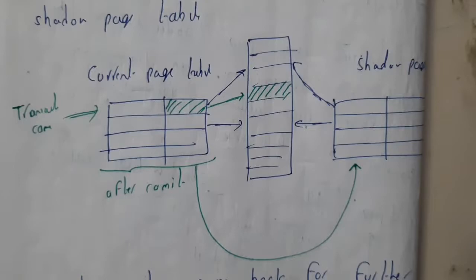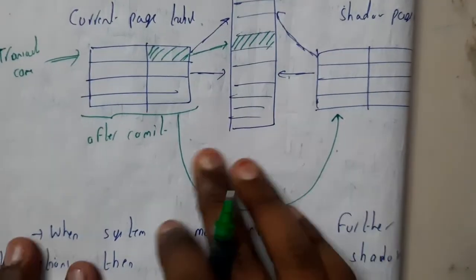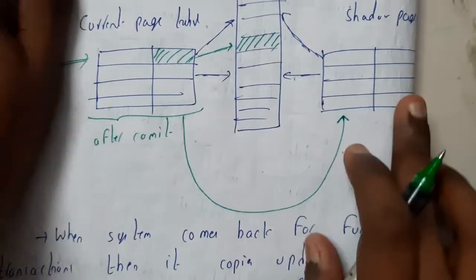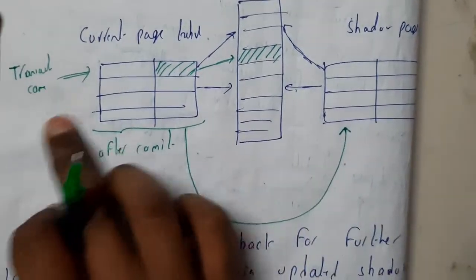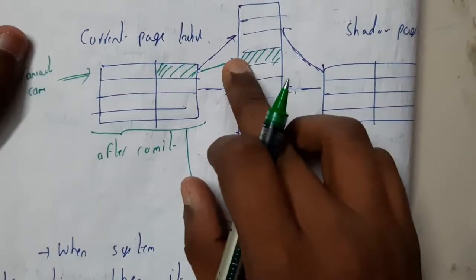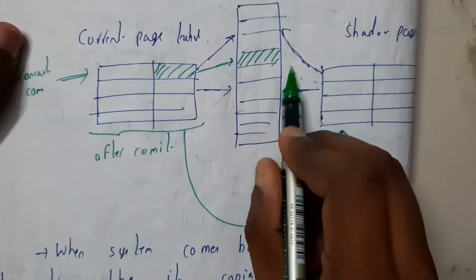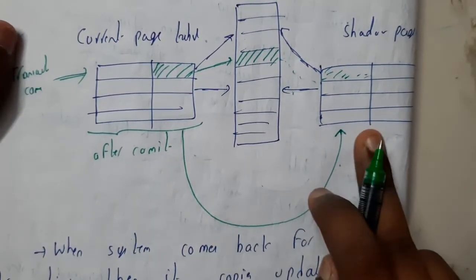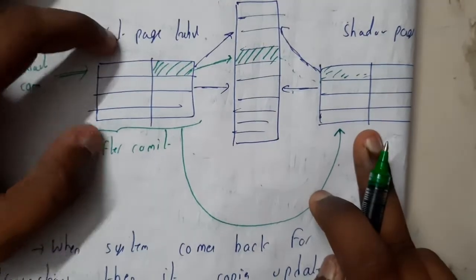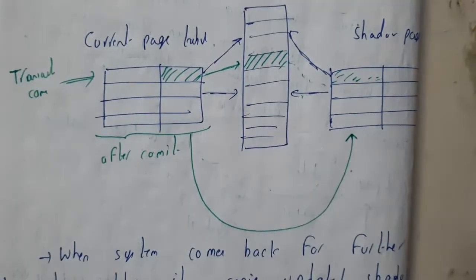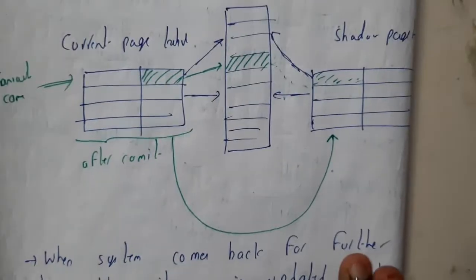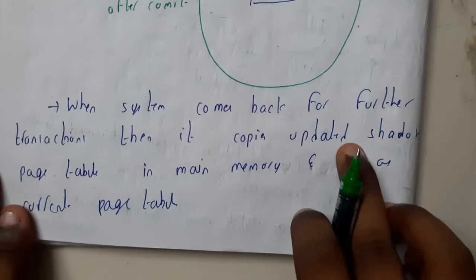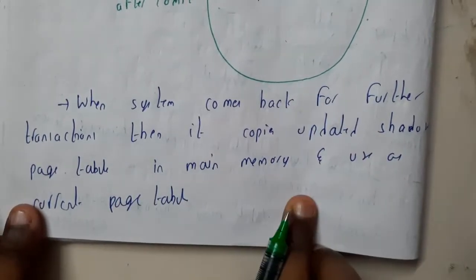Looking at the diagram, initially there are no green lines — both tables are identical in the initial state. When a transaction comes in, it is stored in the current page table. After committing, the data is copied to the shadow page table, which then becomes our new table. The system updates continue in the current page table, and this process repeats. When the system comes back for future transactions, it copies the updated shadow page table into main memory.